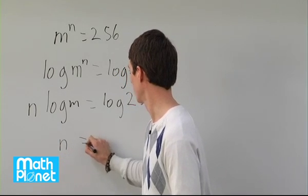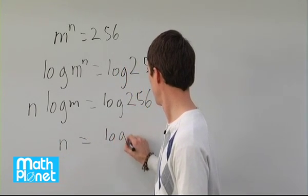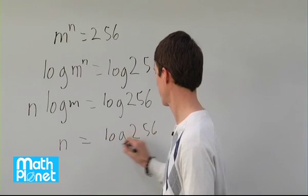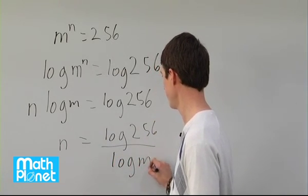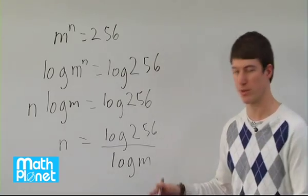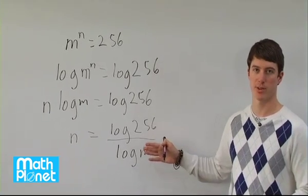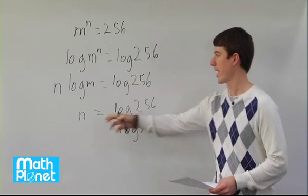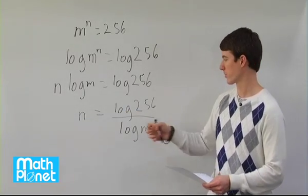So we have n equals log 256 over log m. Now what we need to do here is figure out which answer would give us something that is an integer. We want n to be an integer. We have some integers for our choices of m.